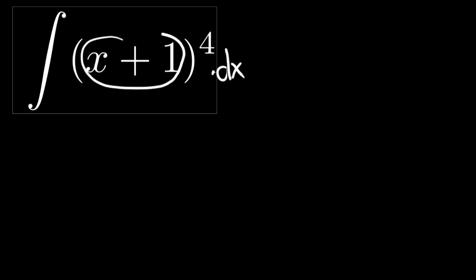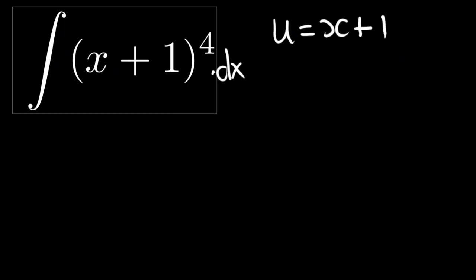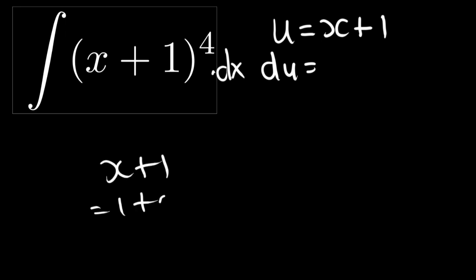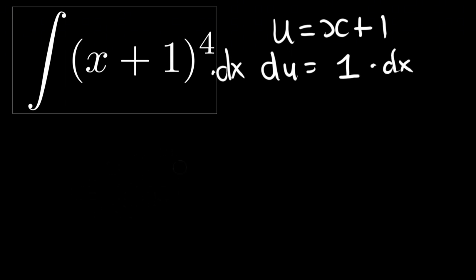We take the function inside the brackets and call it u. Then we derive u with respect to x, meaning we differentiate this function. The derivative of x plus one is one plus zero, which is one. Notice that this derivative, one, also appears in the original function multiplied by one.